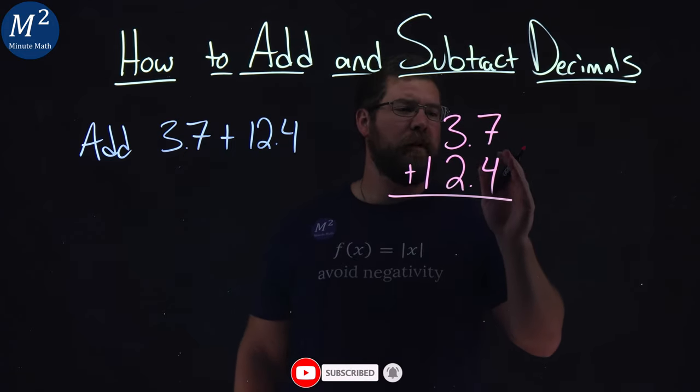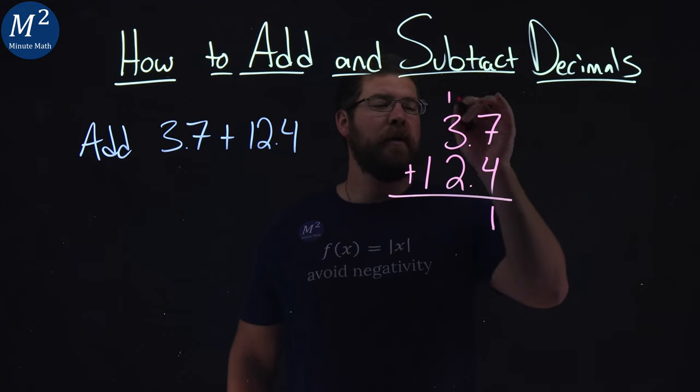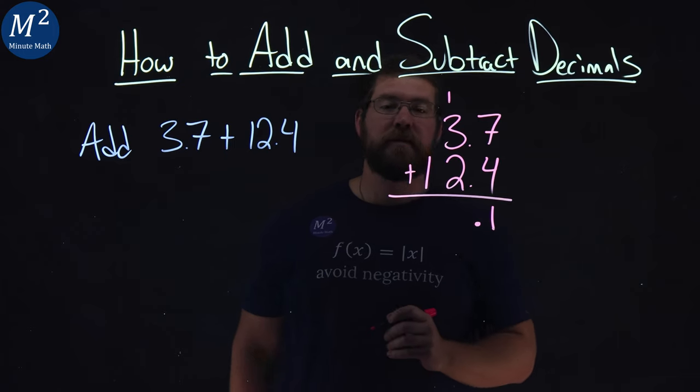First decimal place, 7 plus 4 comes out to be 11. 1 comes down here, we carry the 1, and don't forget there's a decimal place right there.